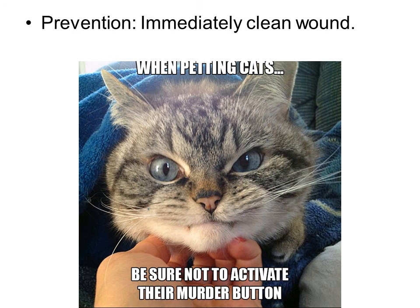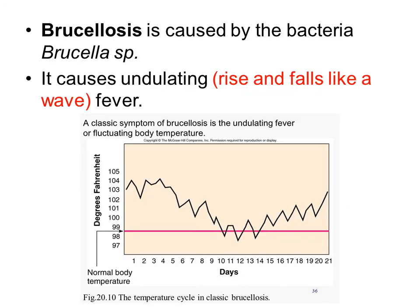Prevention: if you get bitten or scratched by a cat, immediately clean the wound. The next infection is caused by a bacteria named Brucella — Brucellosis. A classical symptom is undulating fever, where the fever elevates in temperature and then lowers, then elevates again and lowers again — a rhythmic undulating movement of temperature that is classical of Brucellosis.